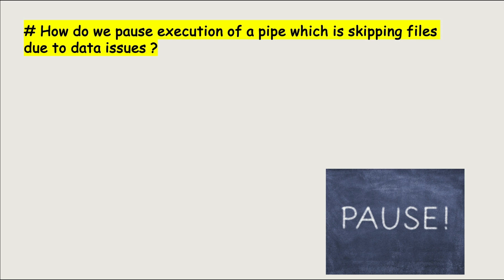How do we pause execution of a pipe which is skipping files due to data issues? Let me talk about the scenario that I encountered on my project. We had data vendors who were sending us files on a regular basis, which we were ingesting using Snowpipe. However, one fine day, the structure of the file they were sending us changed and we started seeing file rejections by Snowpipe.